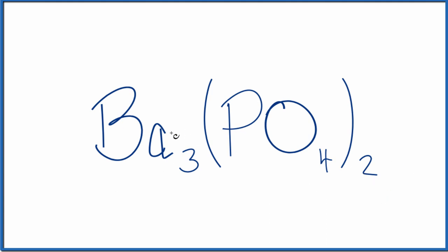First off, barium is a metal, and the phosphate here, PO₄, is a group of nonmetals. So we have metal and nonmetals. This is an ionic compound, so we need to think about charges.